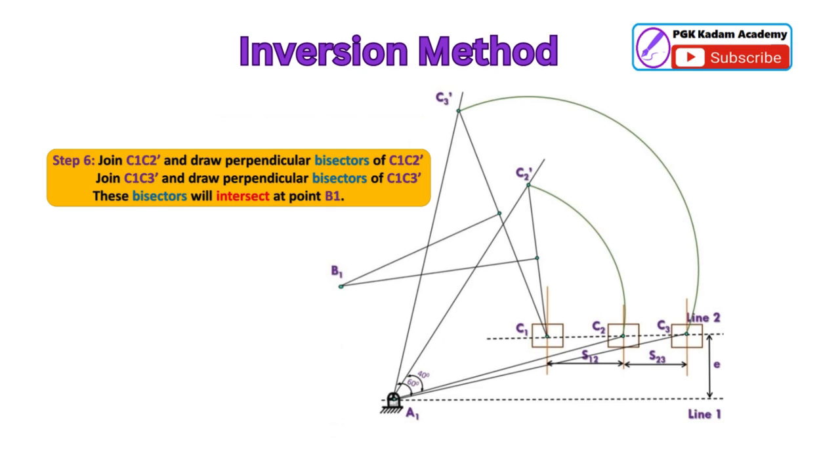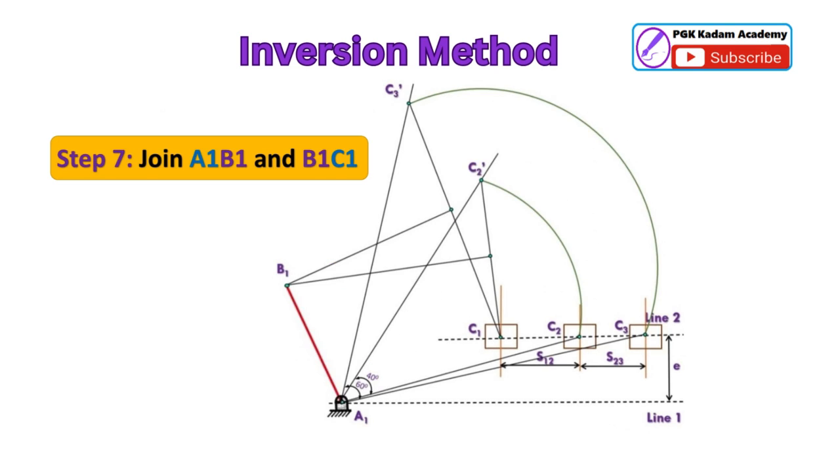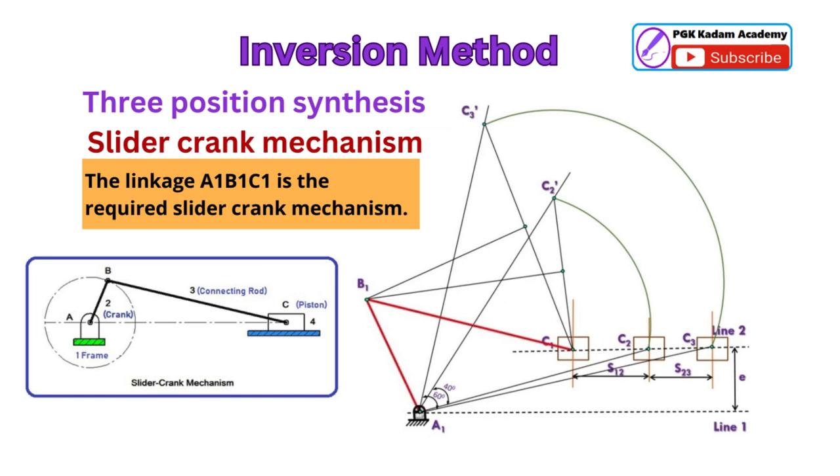Last step 7: Join line A1 B1. Similarly, join line B1 C1. The linkage joined A1 B1 C1 is the required slider crank mechanism.